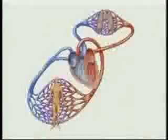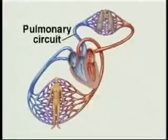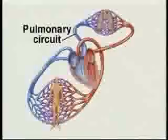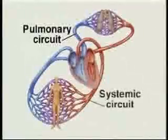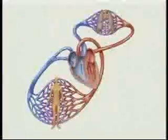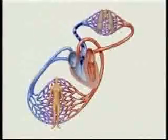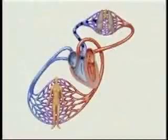The heart is really two pumps in one. One side of the heart pumps blood through the pulmonary circuit; the other pumps it through the systemic circuit. The pulmonary circuit carries oxygen-poor blood from the right ventricle to the lungs, where the blood is oxygenated.